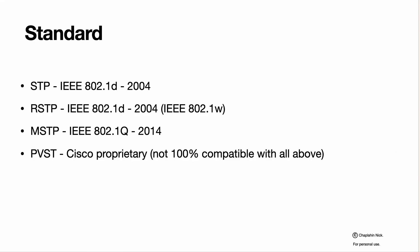RSTP is defined in IEEE standard 802.1d version of 2004. Originally it was defined in 802.1w but integrated later into 802.1d. MSTP is defined in 802.1q version 2014. PVST is a Cisco proprietary protocol. Cisco claims it is compatible with 802.1w, though you should expect it will not be 100% compatible with all the above, but without critical issues.